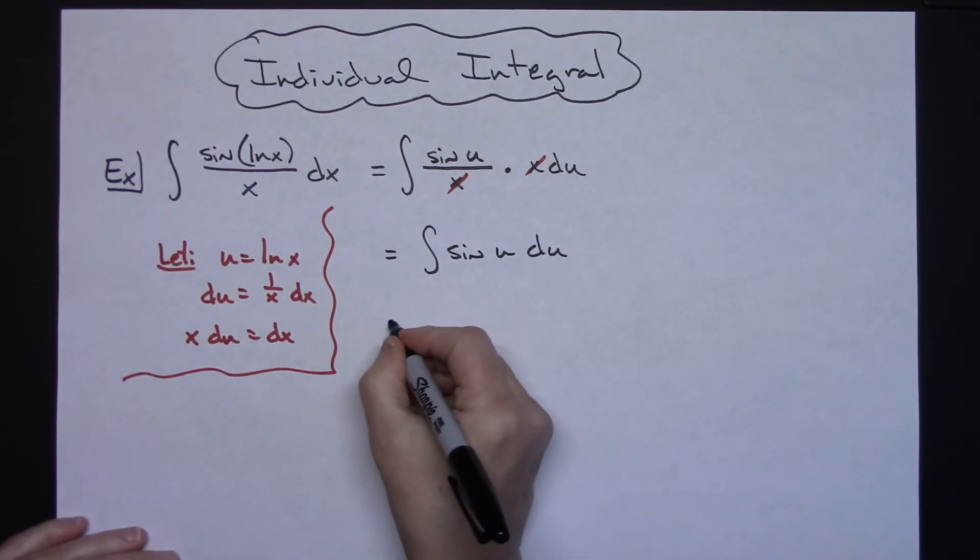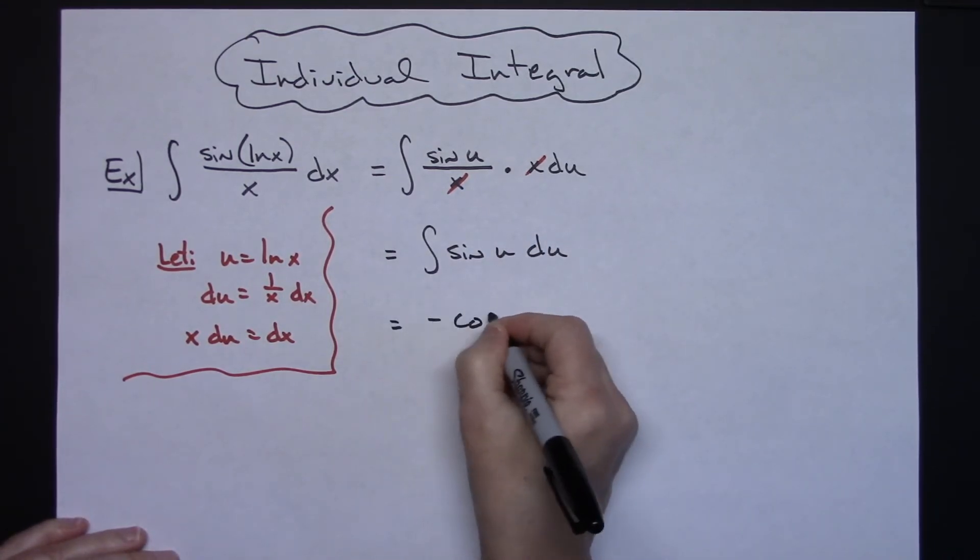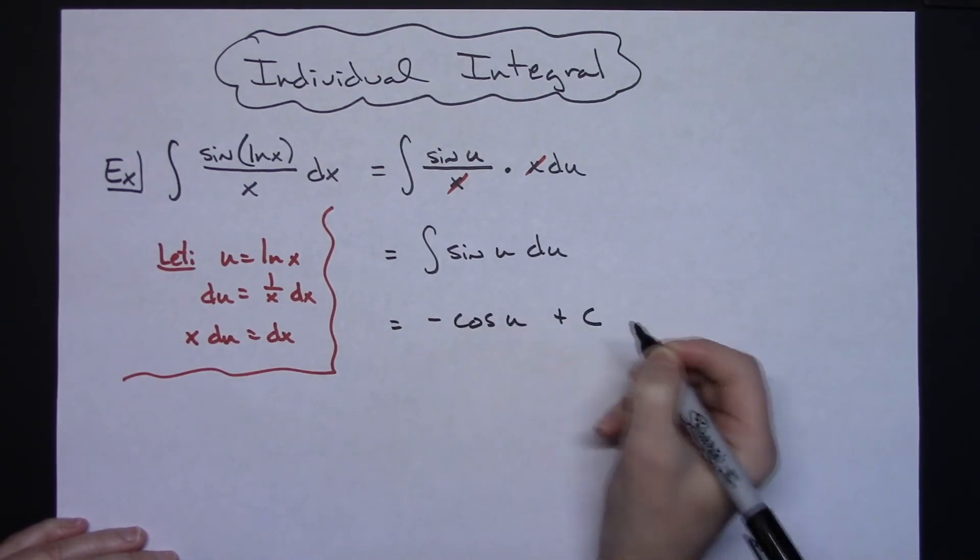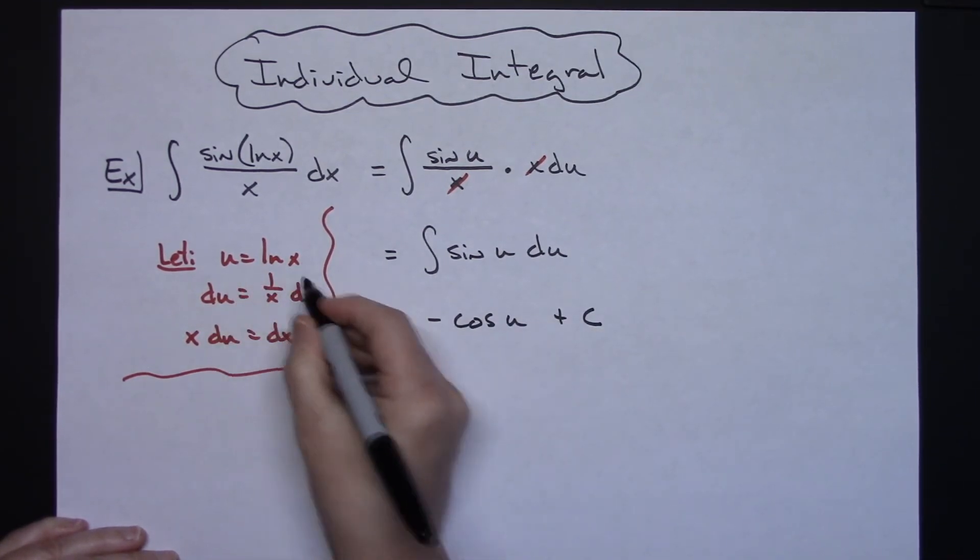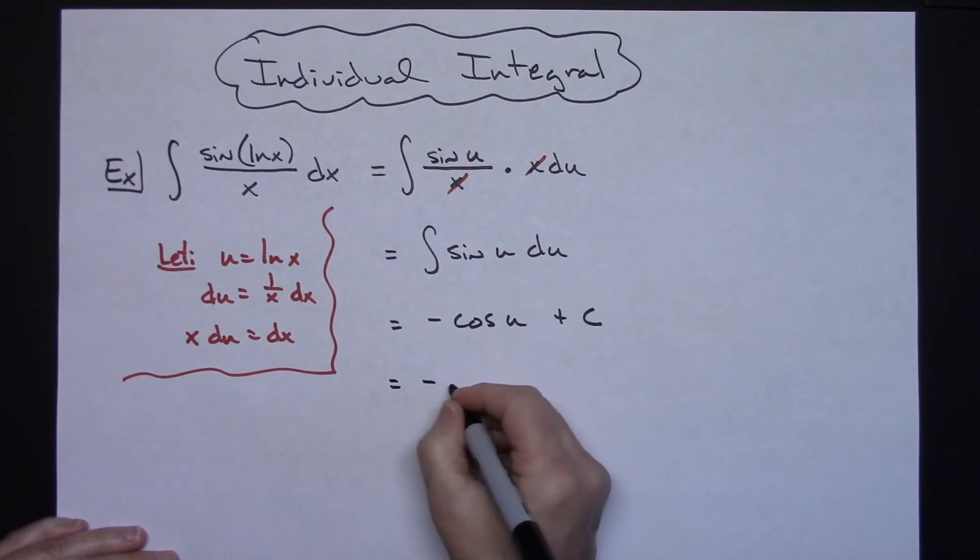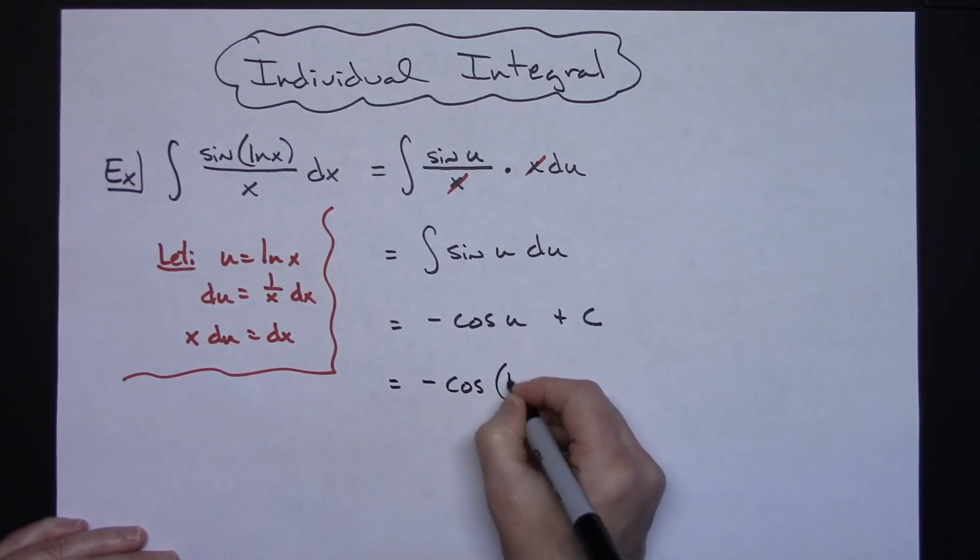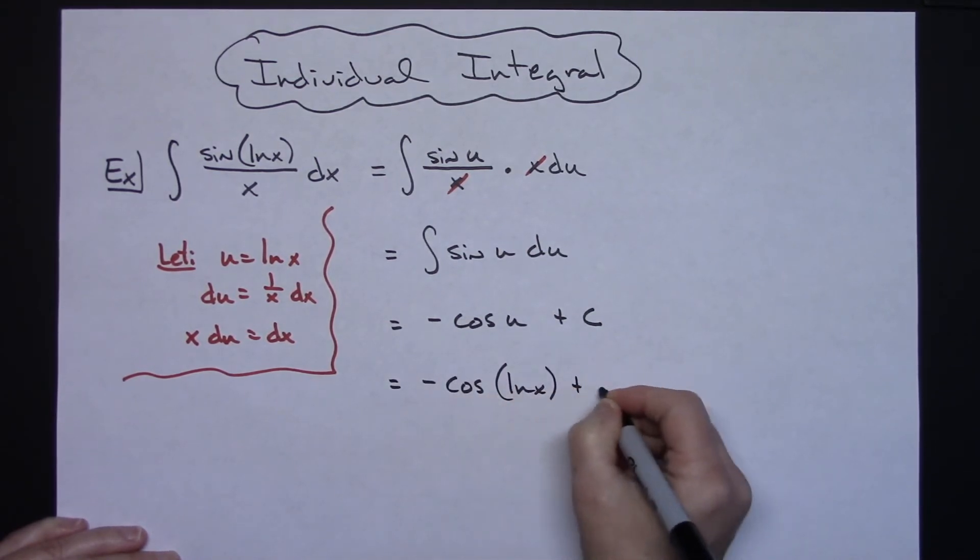When we integrate sine we will get a negative cosine u and we can go ahead and add that plus c and replace our u with what it equals: negative cosine natural log of x plus c.